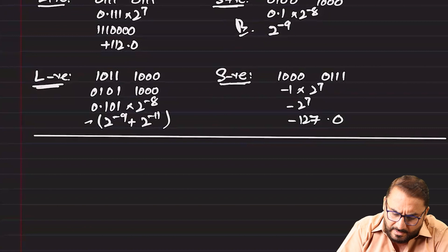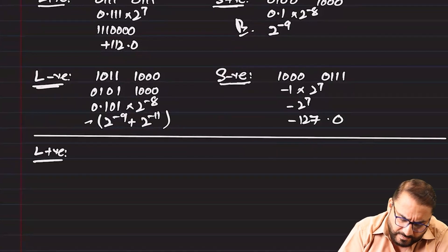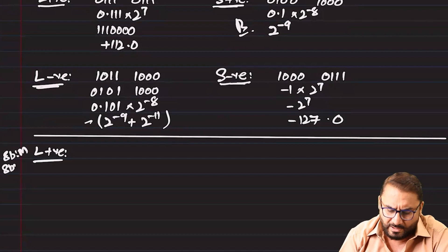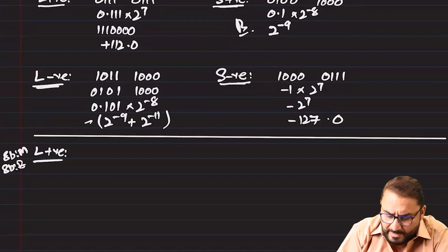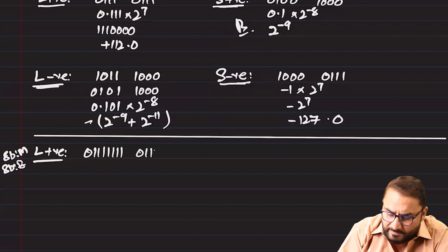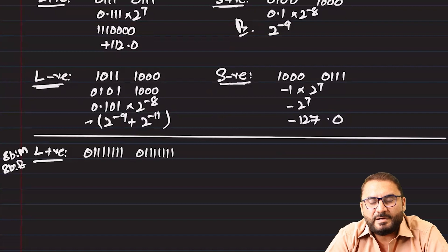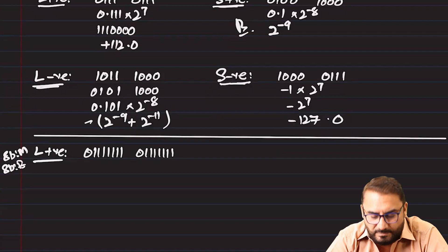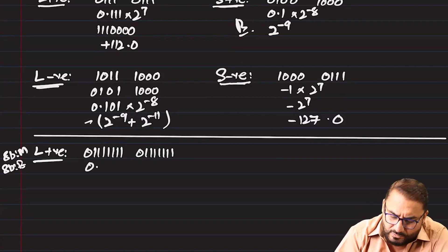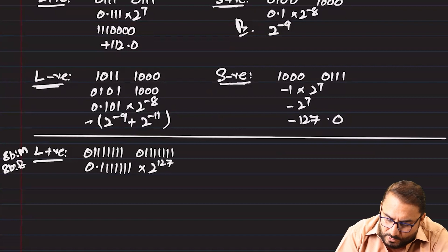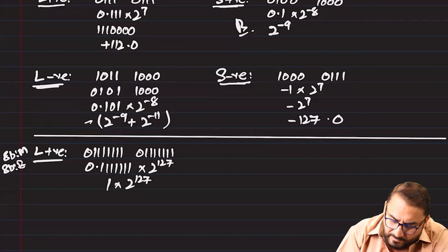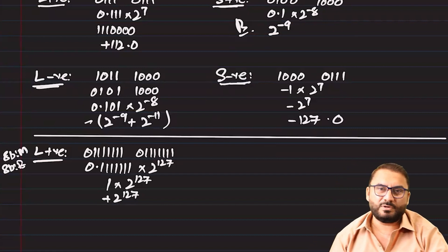For the largest positive number with 8-bit mantissa and 8-bit exponent: mantissa is 0.1111111 and exponent is 01111111 = 127. Whenever you have more than five ones in the mantissa, consider it approximately 1 since a calculator is not available. So this becomes approximately 1 × 2^127, and the answer is +2^127.